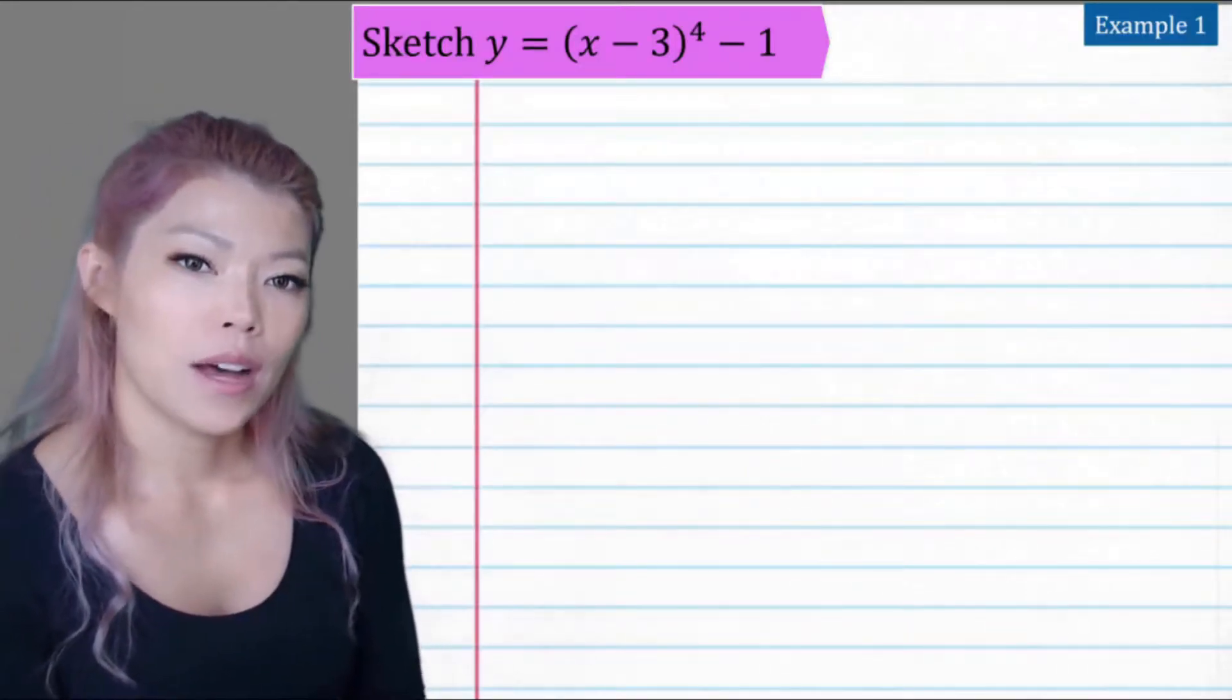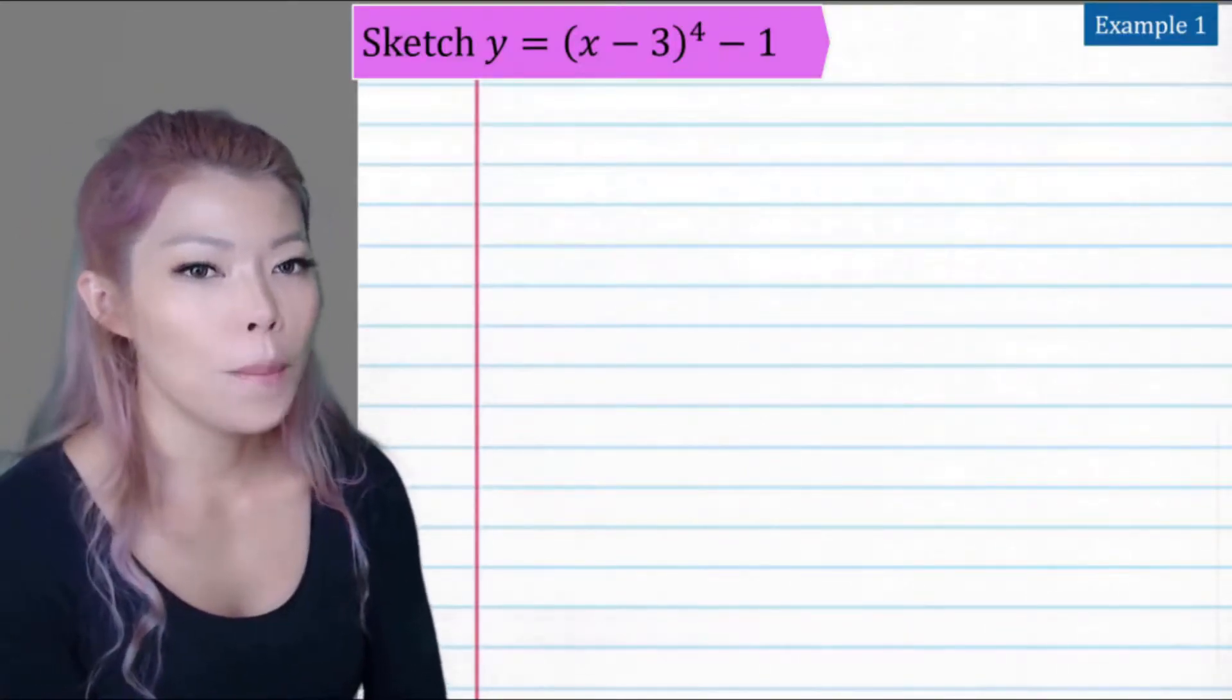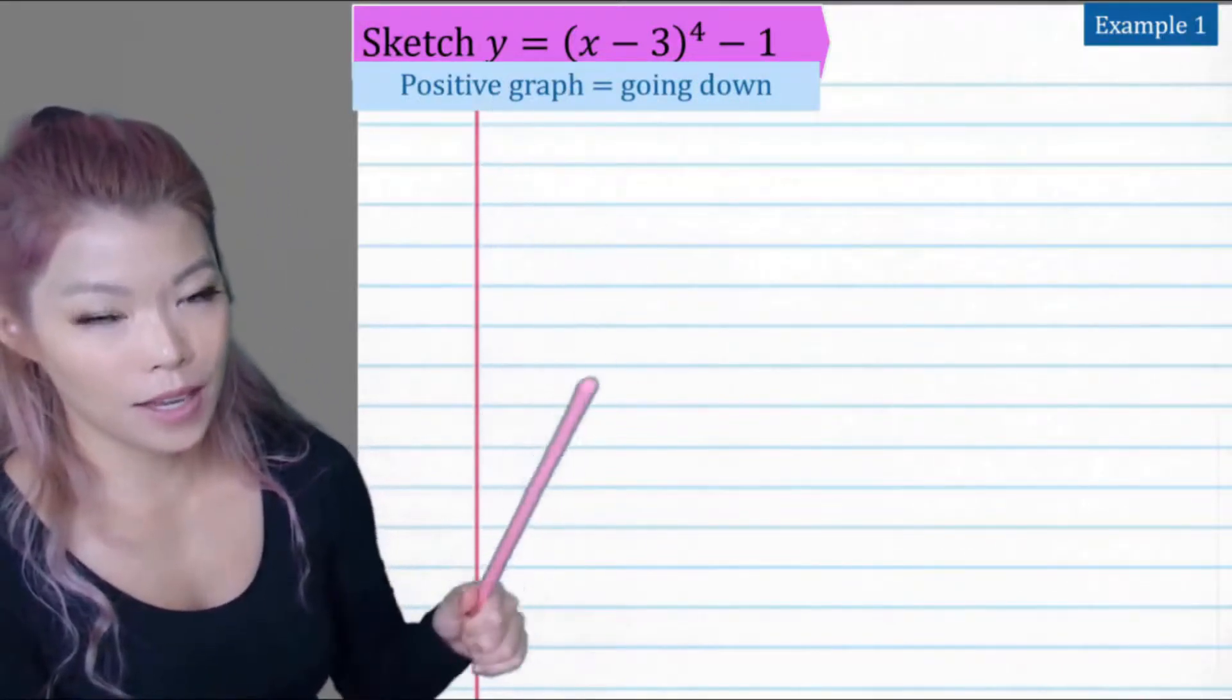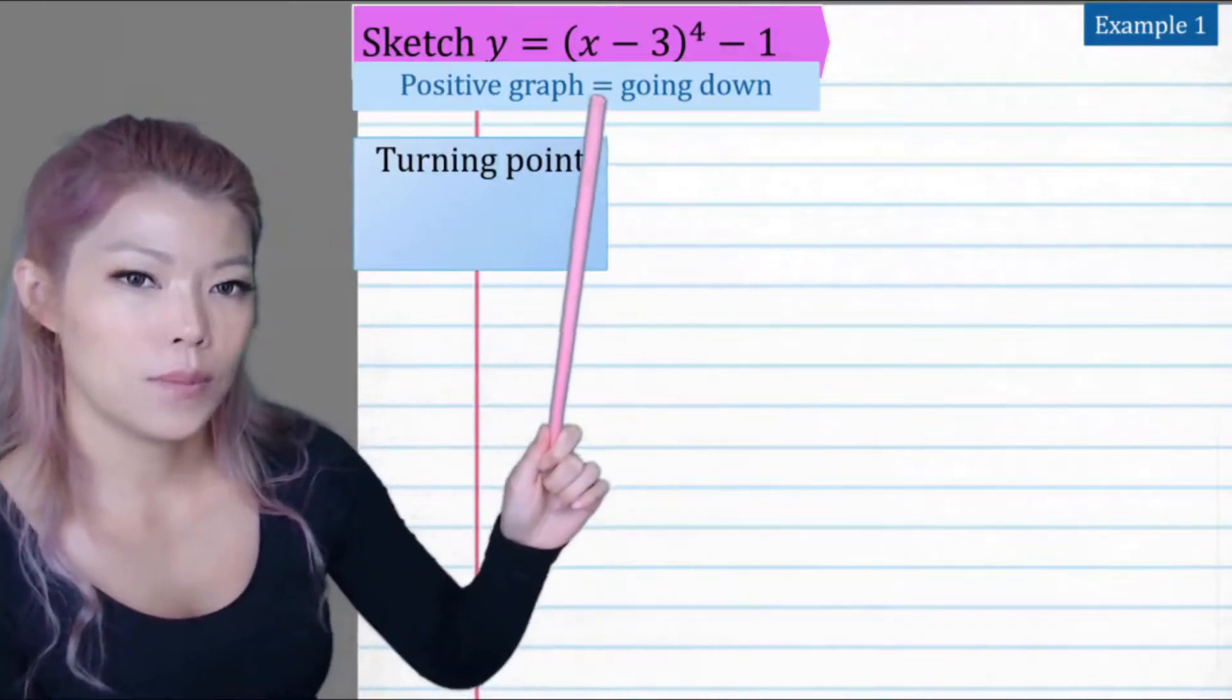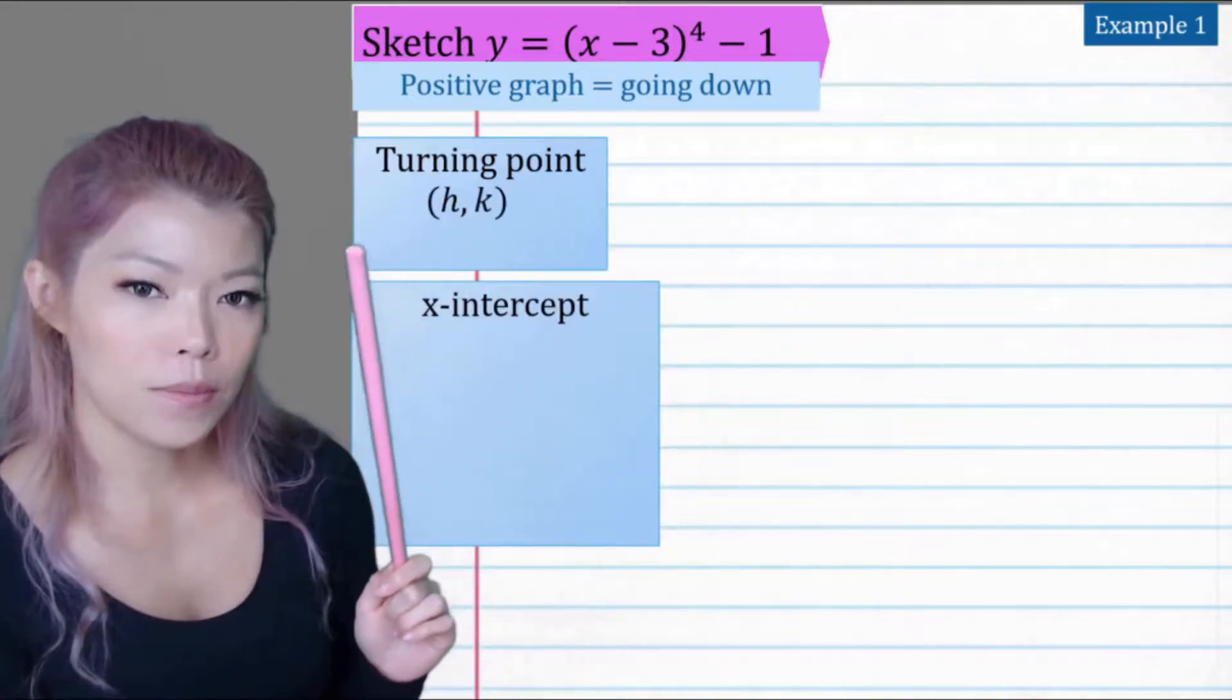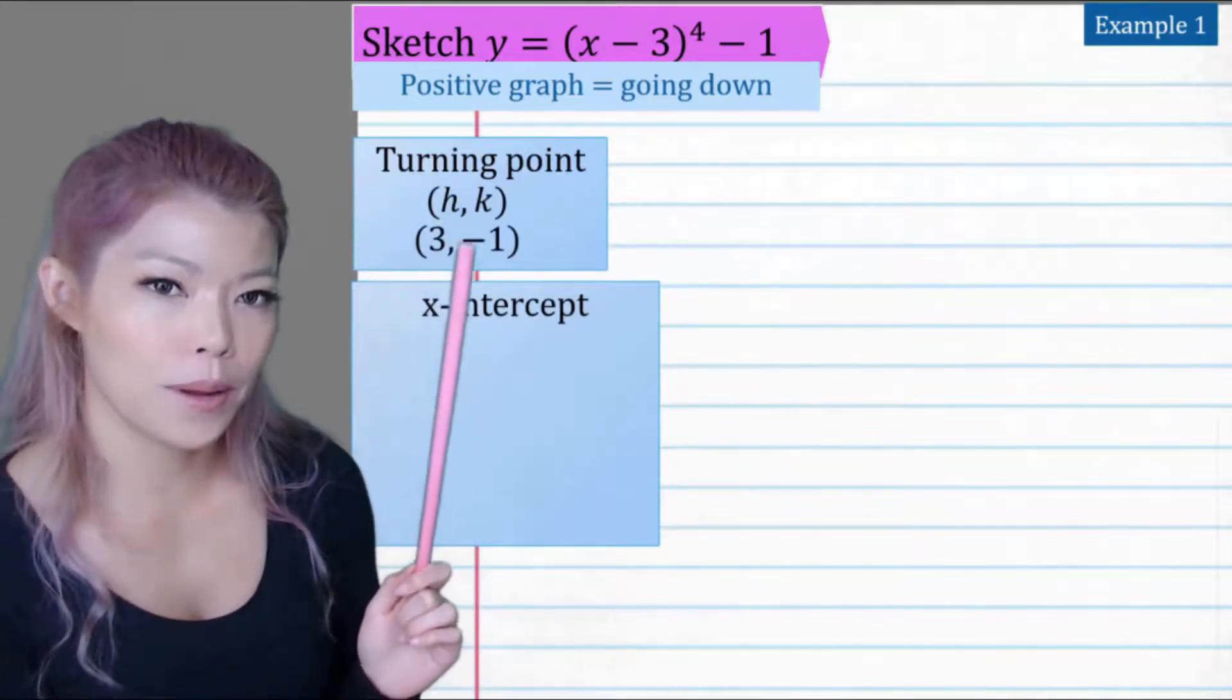Let's do an example. Example 1: x minus 3 to the power 4 minus 1. So it's a positive graph because x times x times x times x is positive. And it has been moved to the right by 3 and down by 1. So the turning point will be H,K or 3, minus 1.